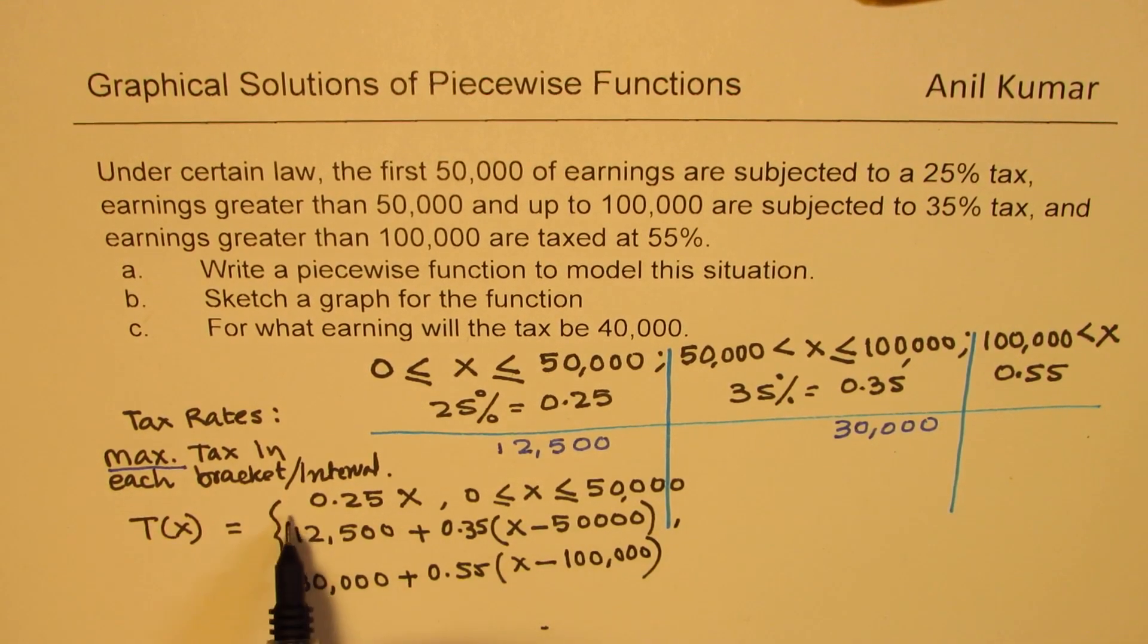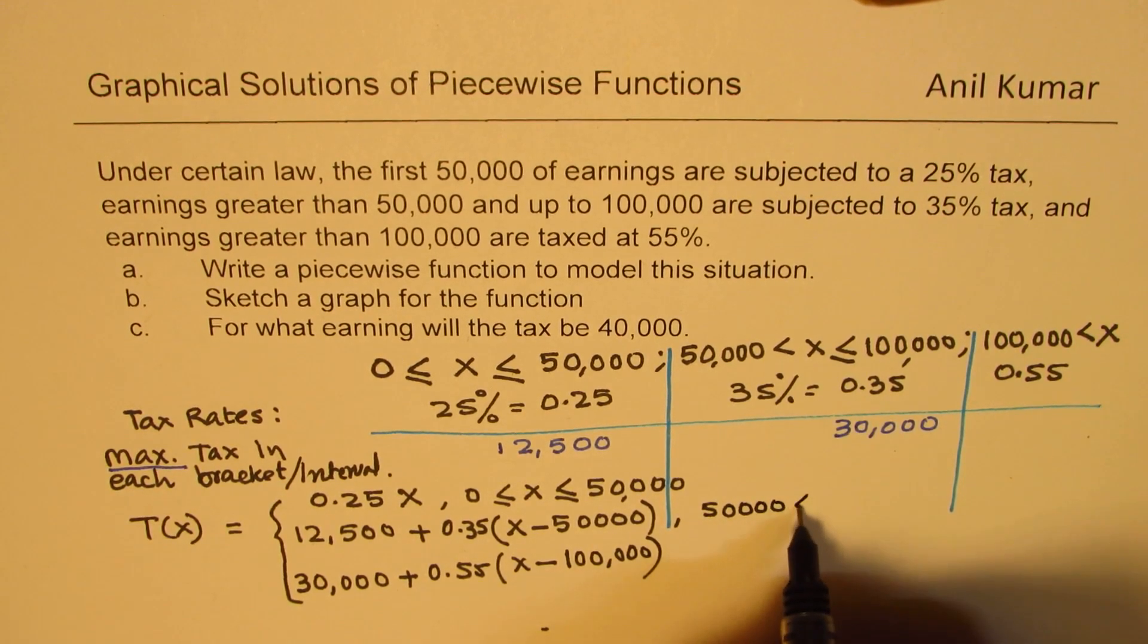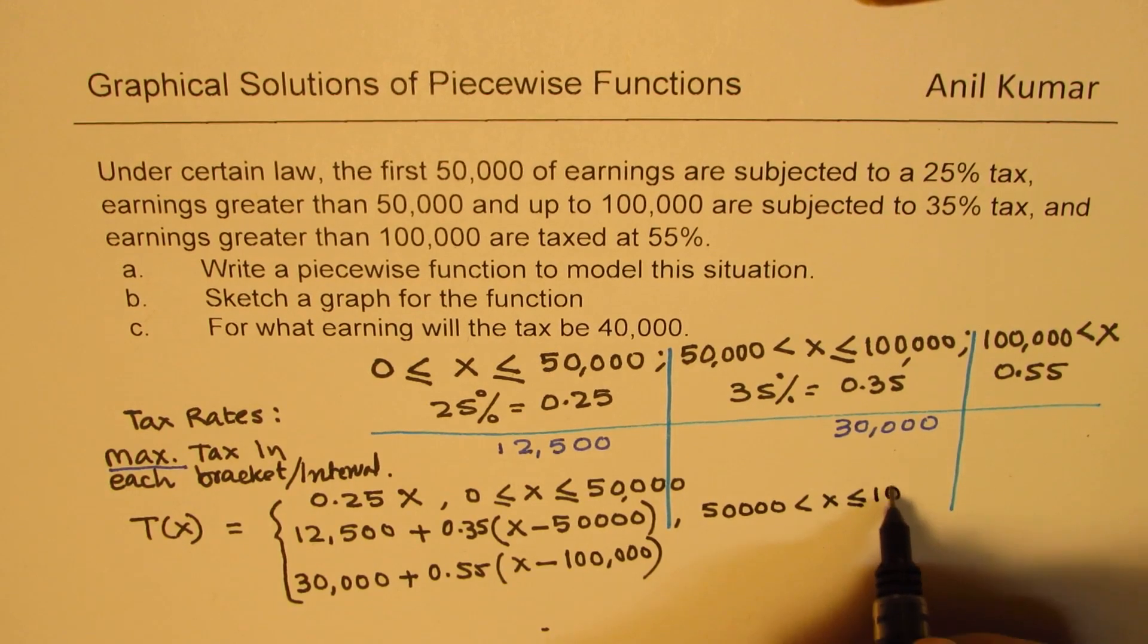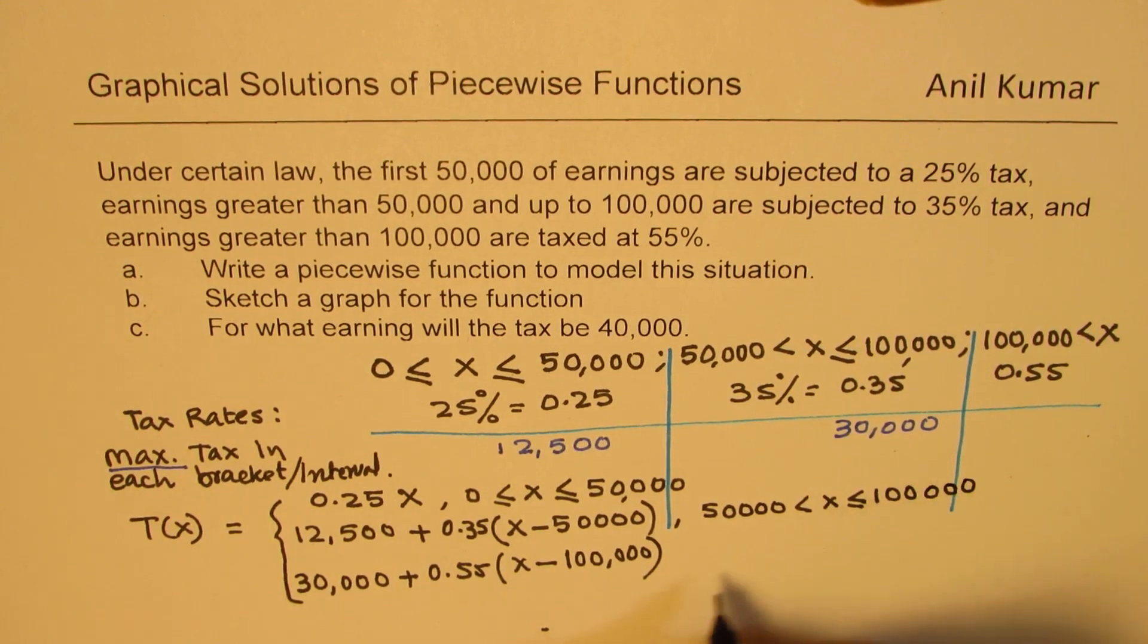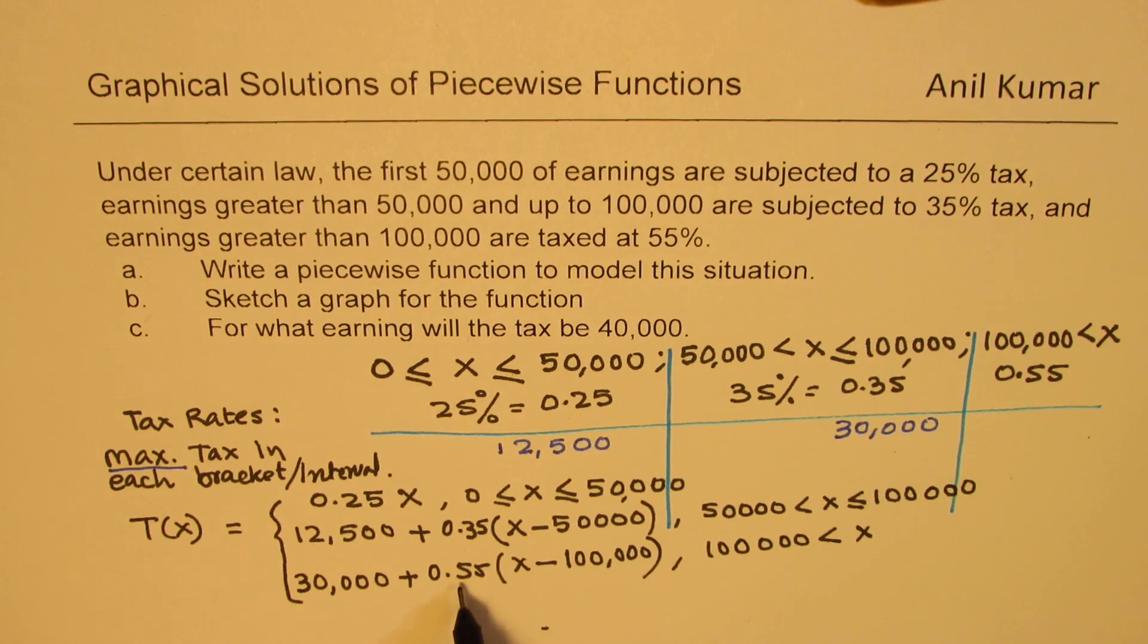So the first bracket, you are paying at the rate of 25%. The second bracket is when your earnings are more than 50,000 but less than or equal to 100,000. And the last bracket is when the earnings are more than 100,000. In that case, you have already paid 30,000 for all those earnings which were less than 100,000, and on the balance you pay at the rate of 55%. So that is how we find our piecewise function.